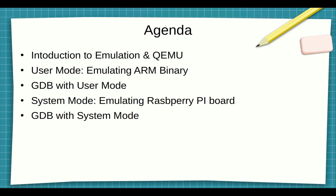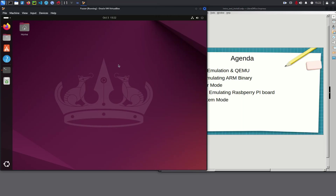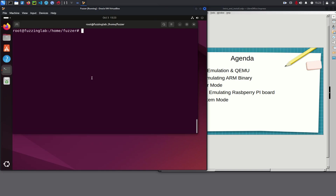In the third video we will see how we can use GDB with user mode. In the fourth video we will emulate a complete system — in this case a Raspberry Pi board. In the final video we will see how we can use GDB to debug, for example, the Linux kernel running on a Raspberry Pi board. So let's get started. First, I will be using OpenSUSE in this series, as you can see here — it's the most recent version and the kernel version is 6.8.